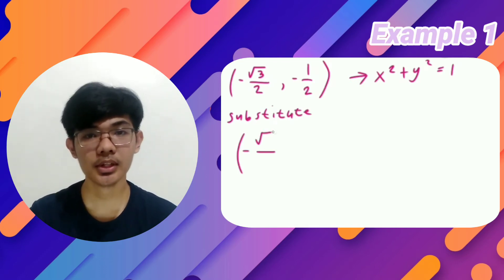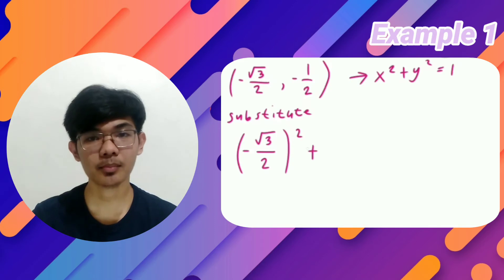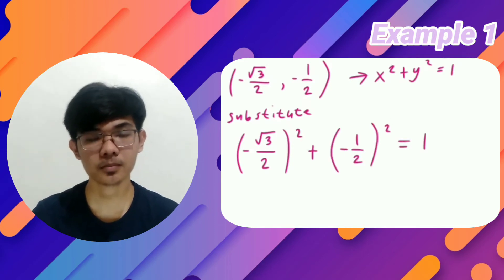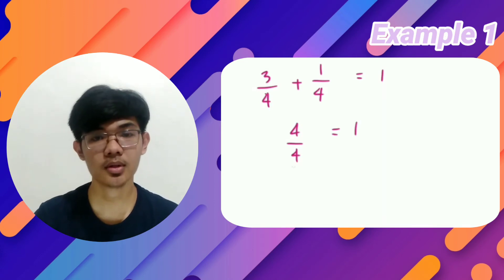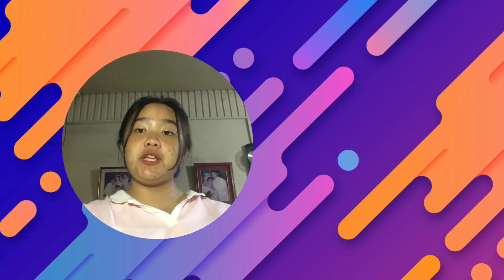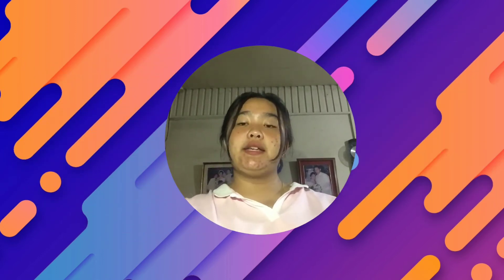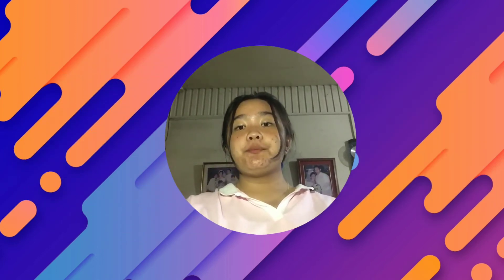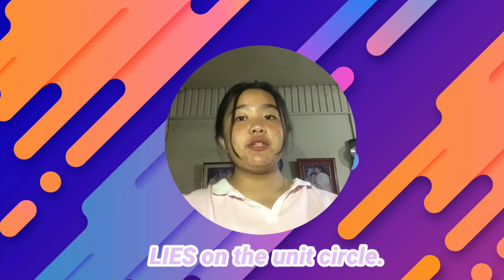Thus, it becomes (-√3/2)² + (-1/2)². To simplify, it becomes 3/4 + 1/4, which equals 1. Thus, the point (-√3/2, -1/2) lies on the unit circle.